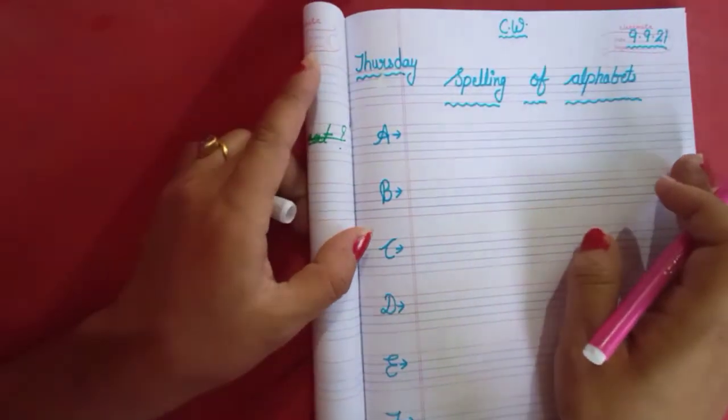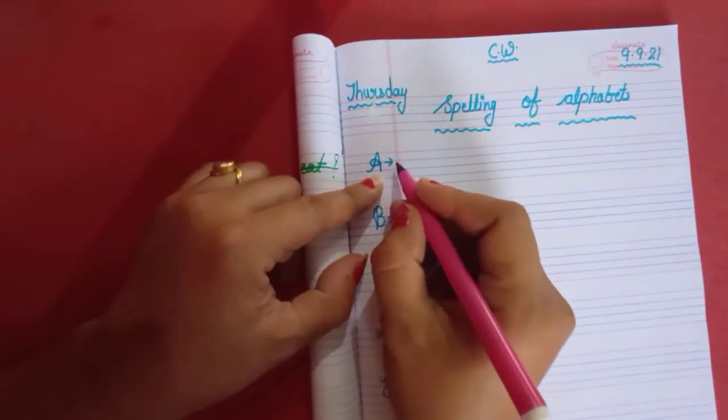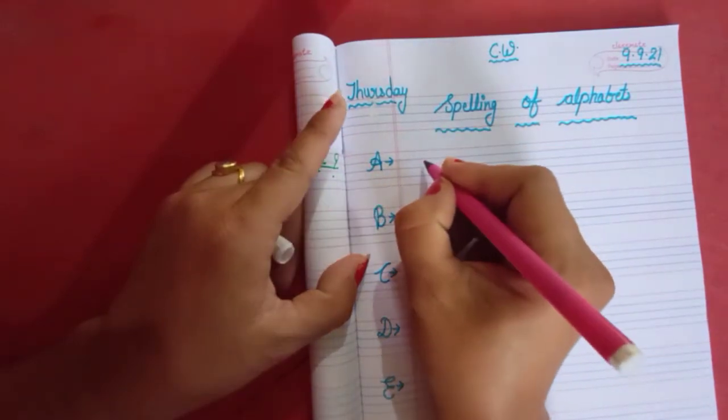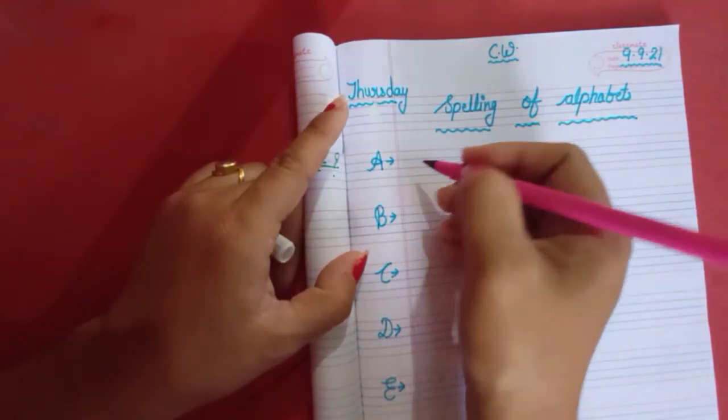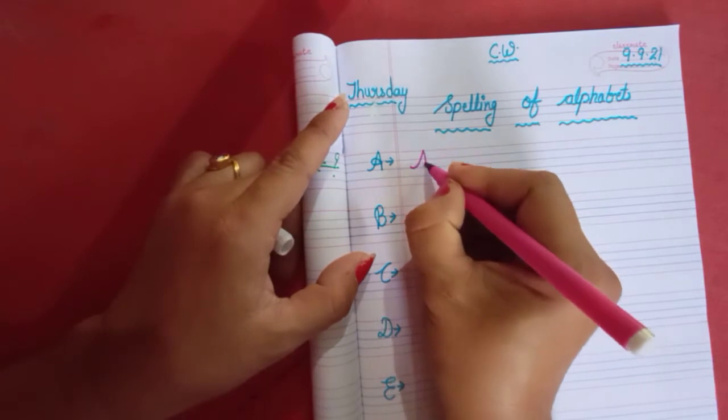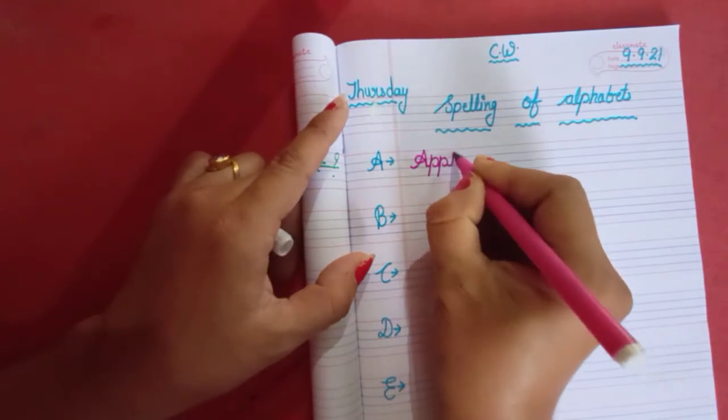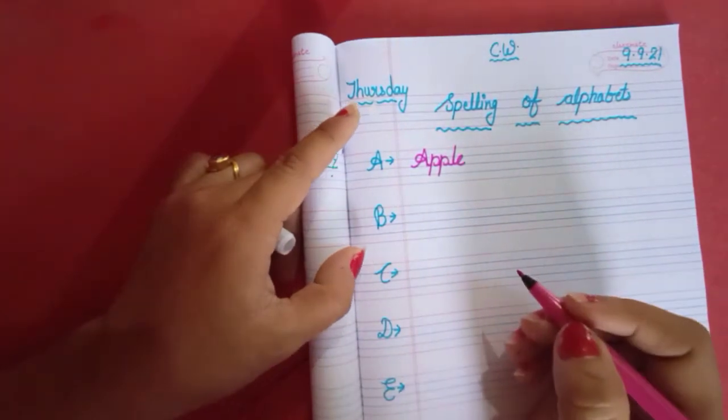And children, remember one thing. Use only cursive writing. Now, let's start. Letter A. A for apple. So, write down here. First letter capital. And back is small. A double P L E apple.